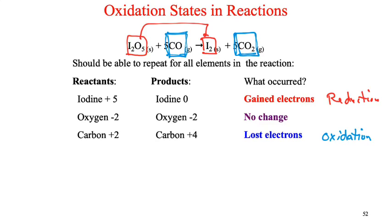It might be nice if we had a way to memorize those. LEO says GER — loss, electrons, oxidation; gain, electrons, reduction. LEO — L-E-O — for the astrological sign Leo, representing a lion. Lions are really just really big cats, and what do cats do? They growl. GER — gain, electrons, reduction.